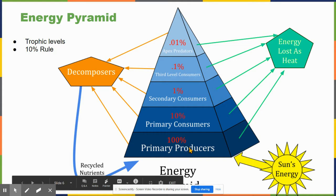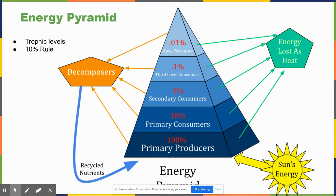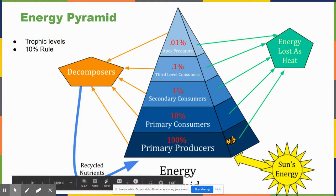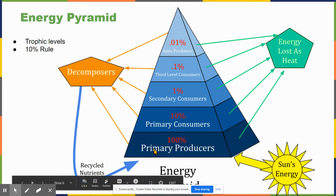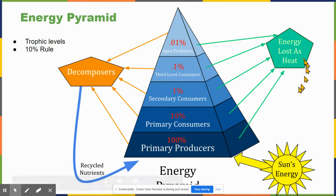These are the trophic levels: primary producers are plants, then herbivores, then omnivores or carnivores, up to the apex predator at the top. Only 10% of the energy gets transferred to each level. So if you have 100 units here, only 10 get transferred up, then 10% of that, and so on. Decomposers work at all levels and recycle nutrients through geochemical processes. That 90% that's lost goes mostly as heat.